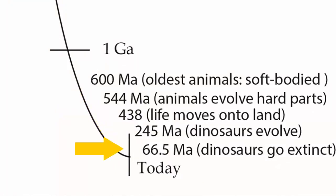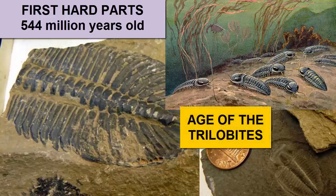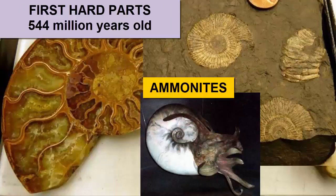After oxygen levels rose to current levels and multi-celled life evolved, evolution really took off. 544 million years ago we see the first evidence of hard parts, contributing to many orders of magnitude more fossils forming, as hard parts make fossilization much easier. It was also the beginning of the age of the trilobites, crab-like animals with exoskeletons that scuttled across the sea floor. Ammonites came next, a nautilus-like cephalopod.